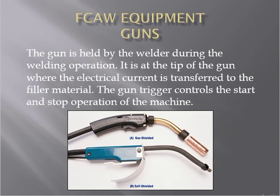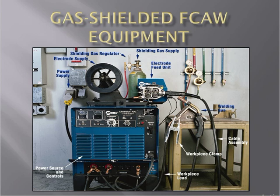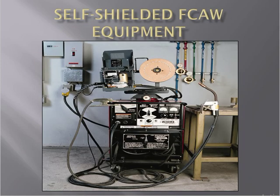FCAW equipment guns come in two types: self-shielded and gas-shielded. The gun is held by the welder during the welding operation. At the tip of the gun, electrical current is transferred to the filler metal. The trigger controls starting and stopping the machine. The basic requirements for gas-shielded FCAW equipment include: power source and controls, shielded electrode supply, gas regulator, shielding gas supply, and electrode feed unit.